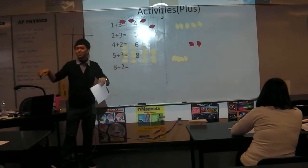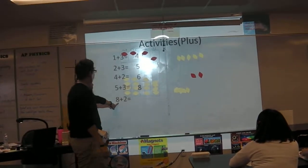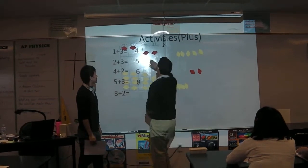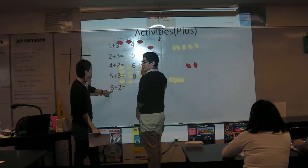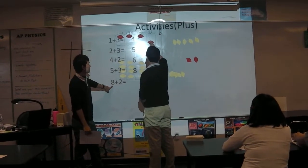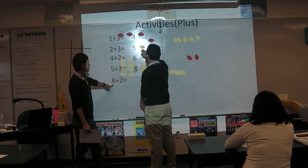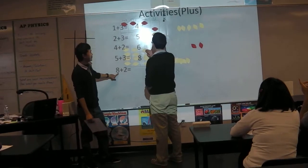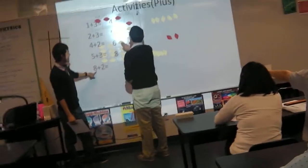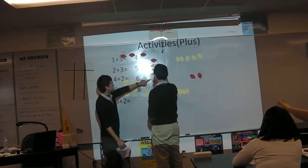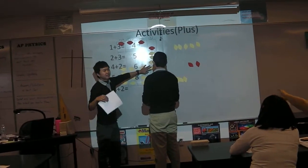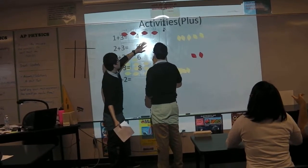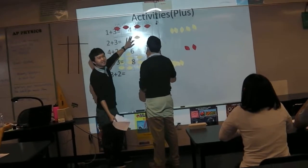For eight plus two: you need to get eight first — five on top and three on the bottom — and then plus two more. Push this. You can see this is one, but there's not enough ones, so you need to put all down and carry one to the tens column. So it represents ten.